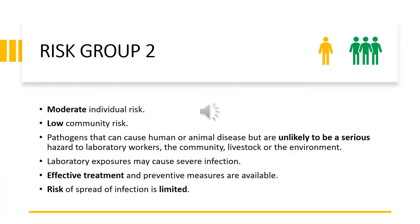Biological agents categorized as risk group two pose a moderate individual risk and a low community risk. These are pathogens that can cause human or animal disease but are unlikely to be a serious hazard to laboratory workers, the community, livestock, or the environment. Laboratory exposures to risk group two biological agents may cause severe infection; however, effective treatment and preventive measures are available, and the risk of spread of infection is limited.